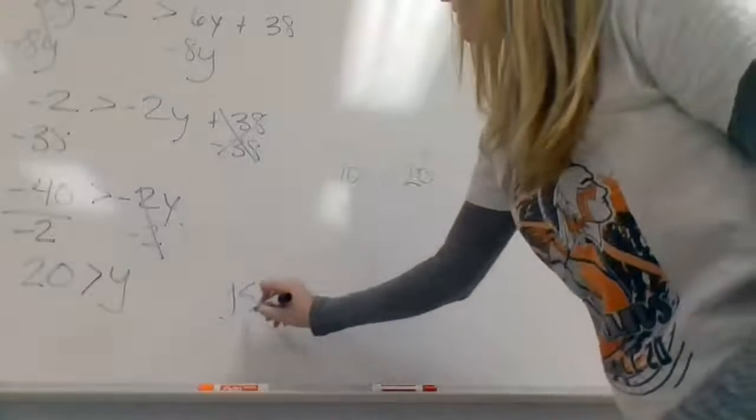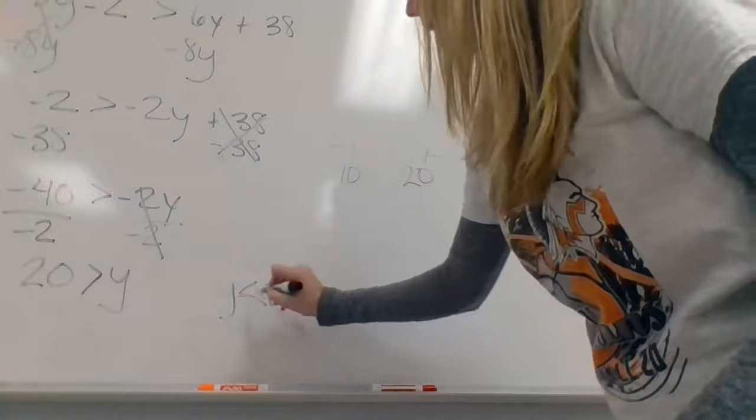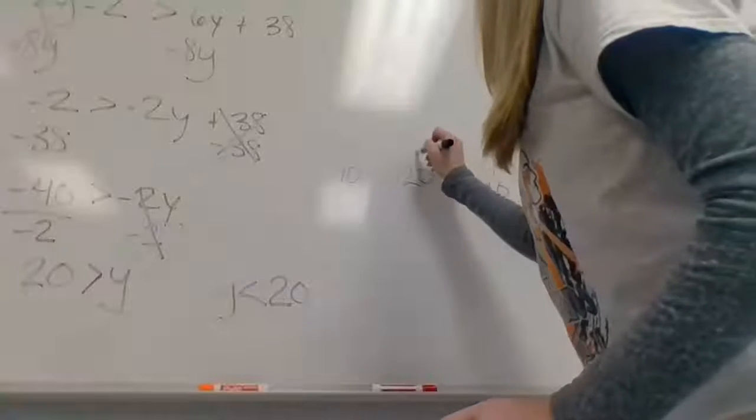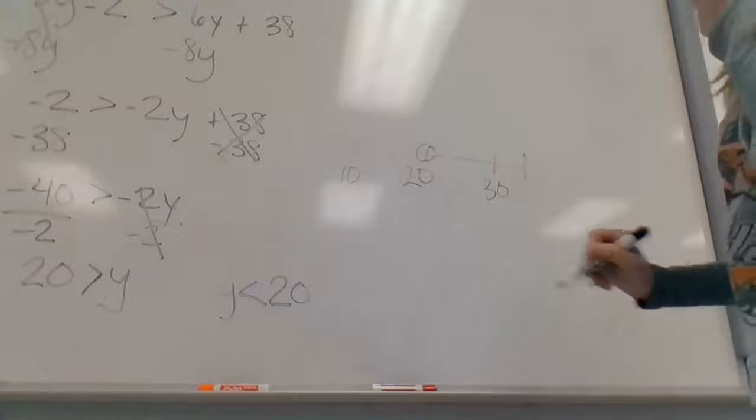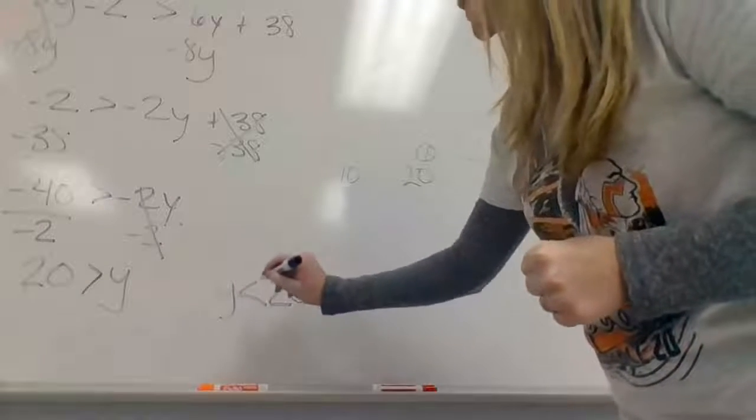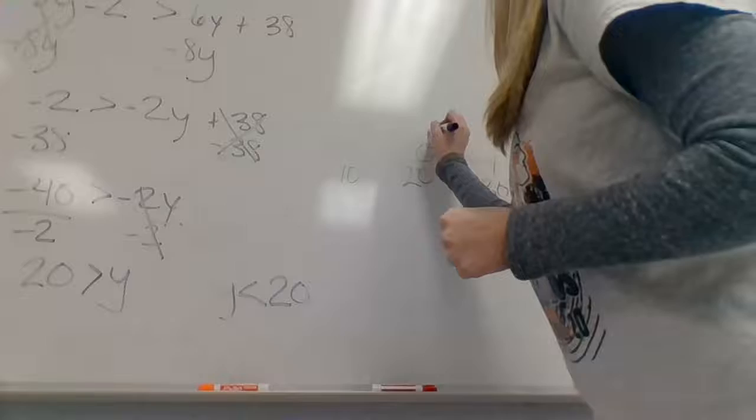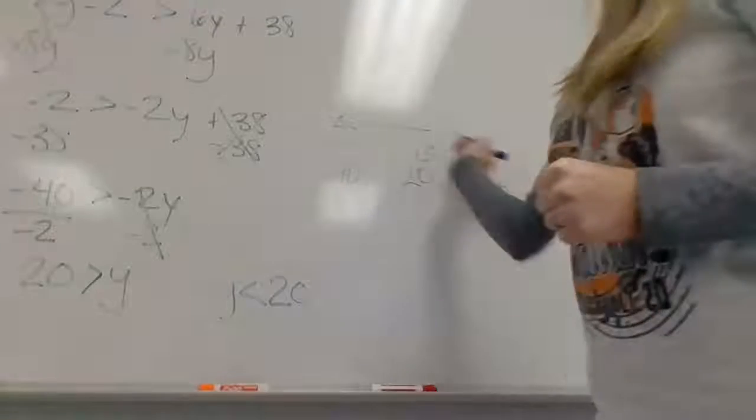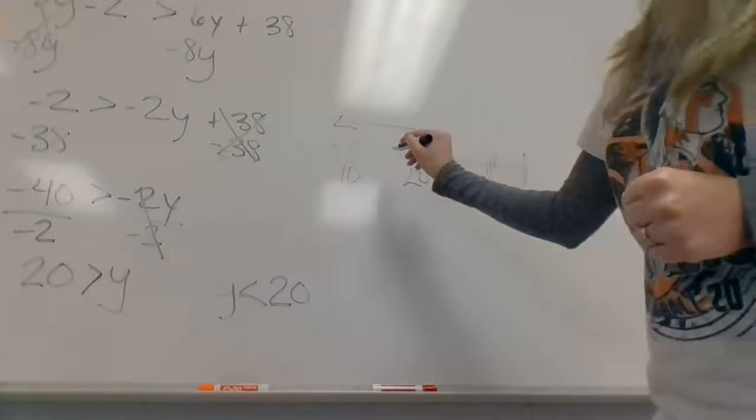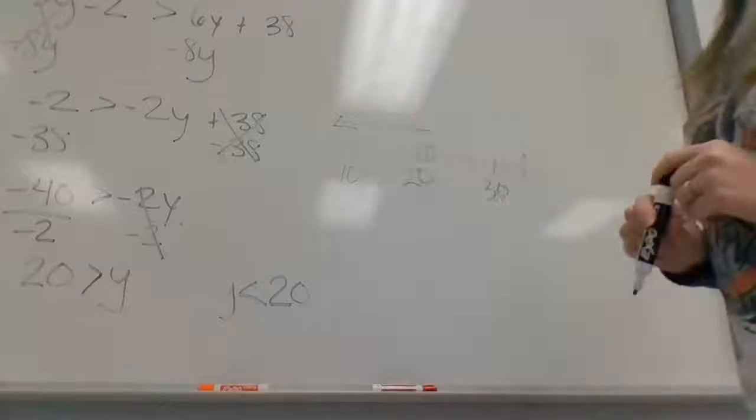Now remember, because there's no equal sign that just says less than, this will be an open dot. And I need to point my arrow where y is less than 20. So in this case, my arrow is going to point towards this way because this is where all of the numbers are less than 20.